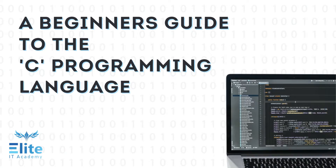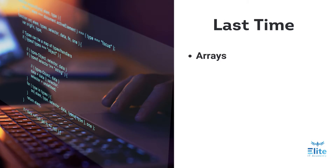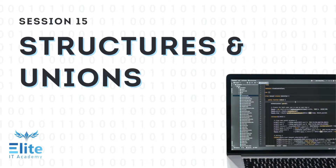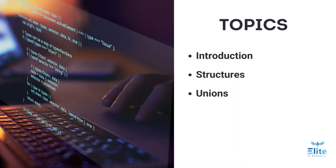Welcome to a new video in our series, A Beginner's Guide to the C Programming Language. The last video discussed arrays and how to declare, initialize, and process data in arrays. In this video, we will see how to create user-defined data types. We will see how structures and unions are declared, initialized, and accessed.